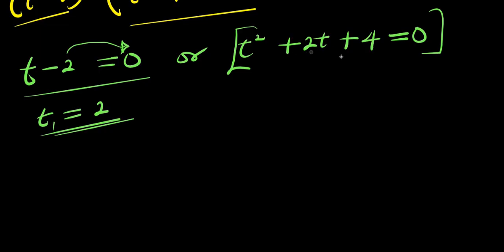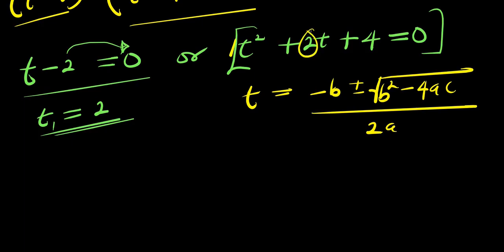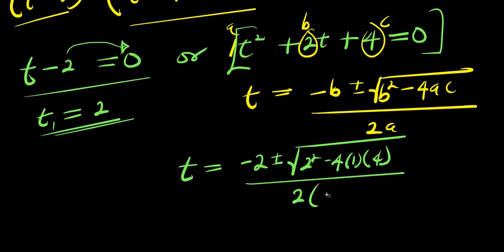So if you have t squared plus 2t plus 4 equals 0, you can solve for t using the formula method. You have t equals negative b plus or minus square root of b squared minus 4ac, divided by 2a. The coefficient of t squared here is 1, the coefficient of t here is 2, and this is c — so b equals 2 and a equals 1. So let's insert it: we are going to have t equals negative 2 plus or minus square root of 2 power 2 minus 4 times 1 times 4, divided by 2 times 1.